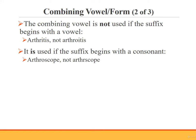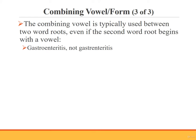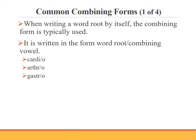When the suffix begins with a consonant, on the other hand, a combining vowel is used. When combining the word root arthr with the suffix scope, we say arthroscope with the combining vowel, not arthrscope without it. Combining vowels are typically used between two word roots, even if the second word root begins with a vowel. For example, we say gastroenteritis with the combining vowel. When writing a word root by itself, the combining form is typically used. The combining form is the word root plus the combining vowel, and it is written as the word root followed by a forward slash followed by the combining vowel. For example: cardi/o, arthr/o, gastr/o.